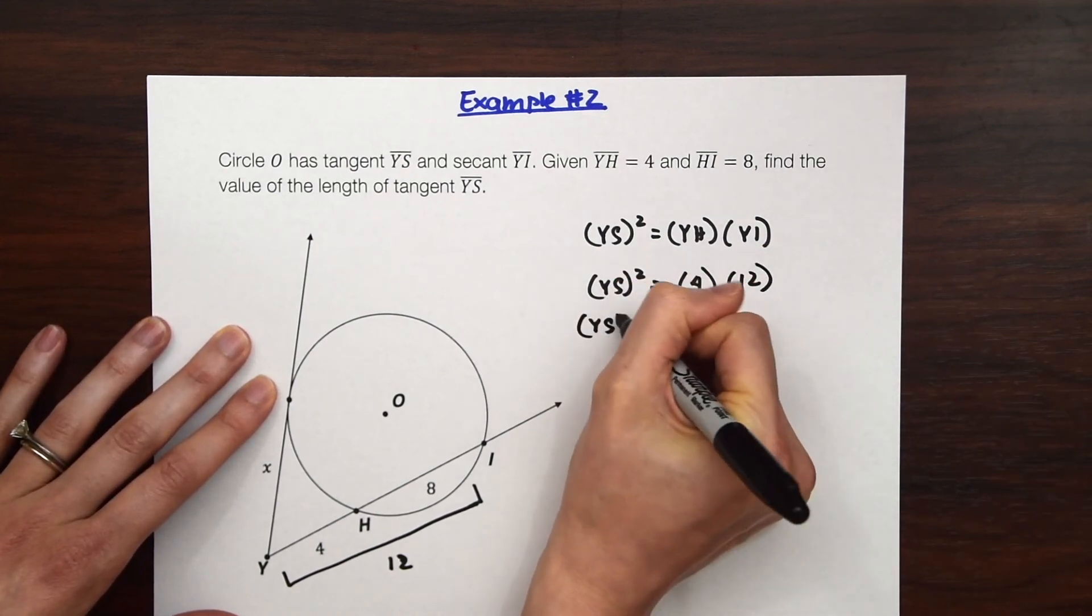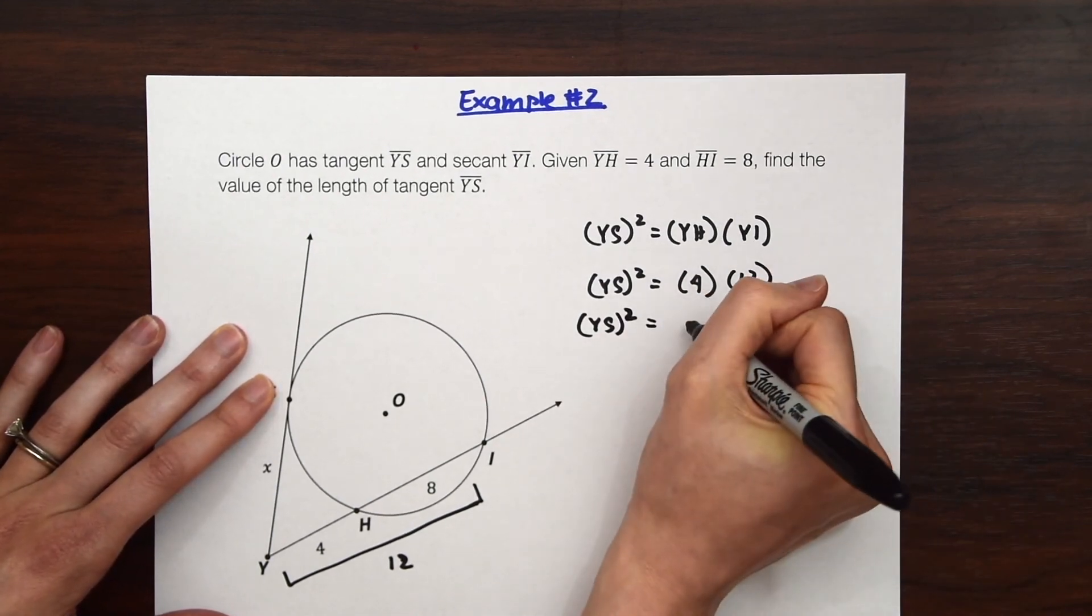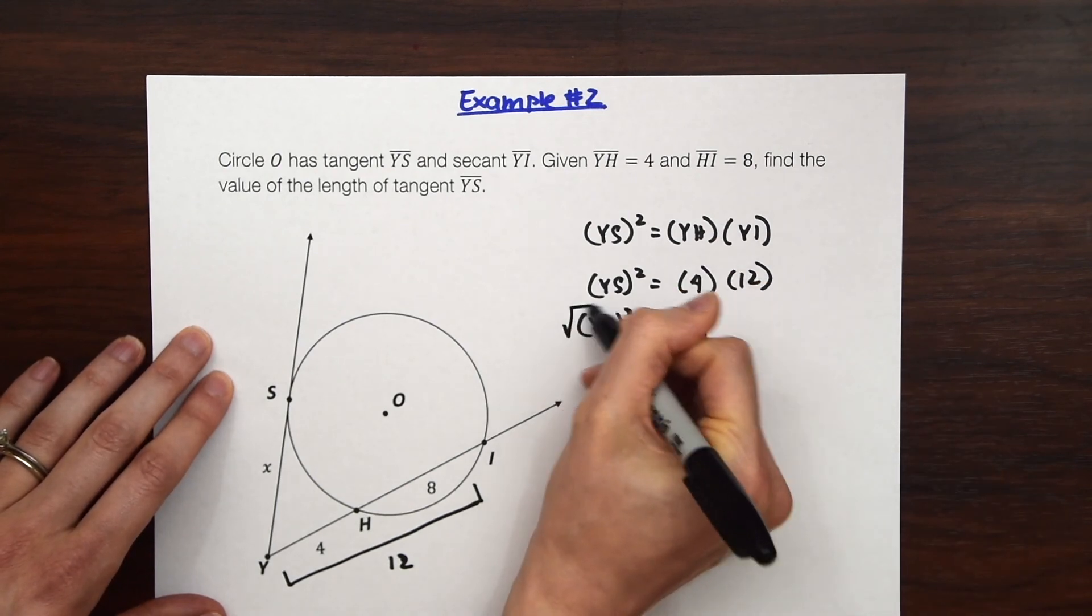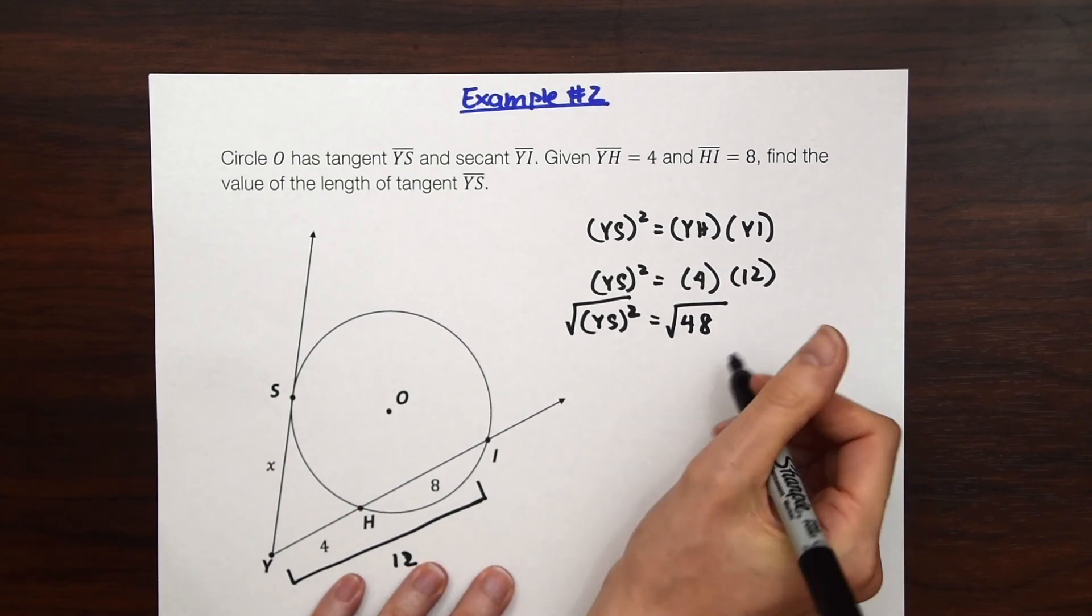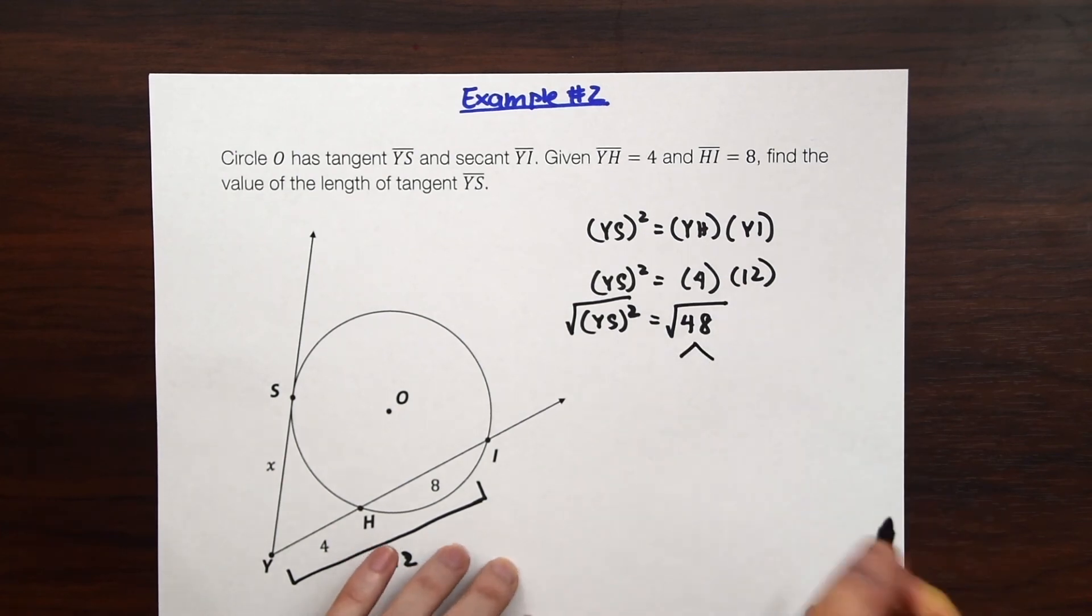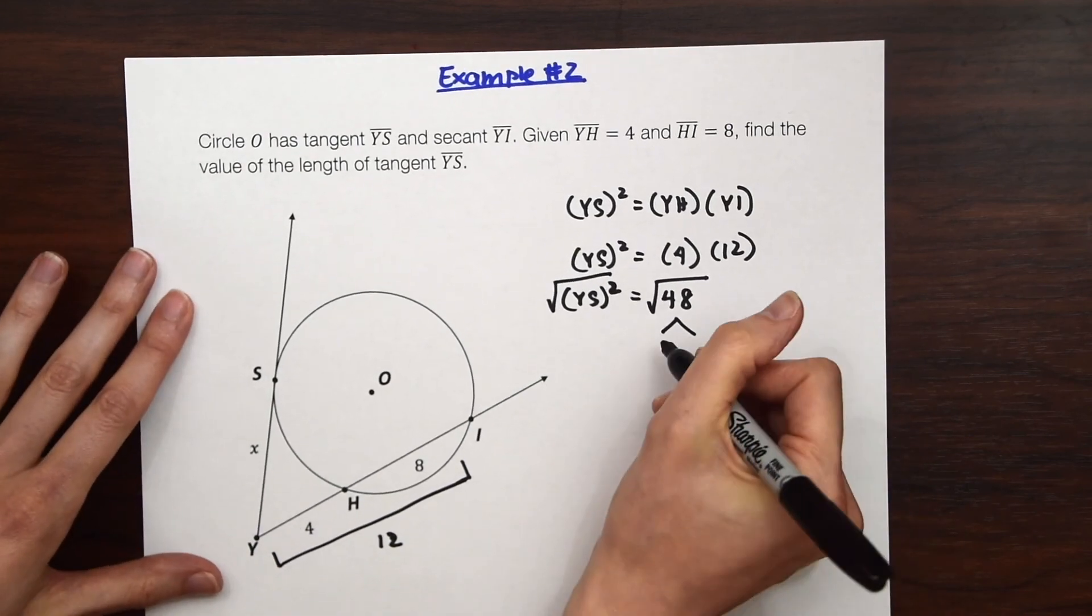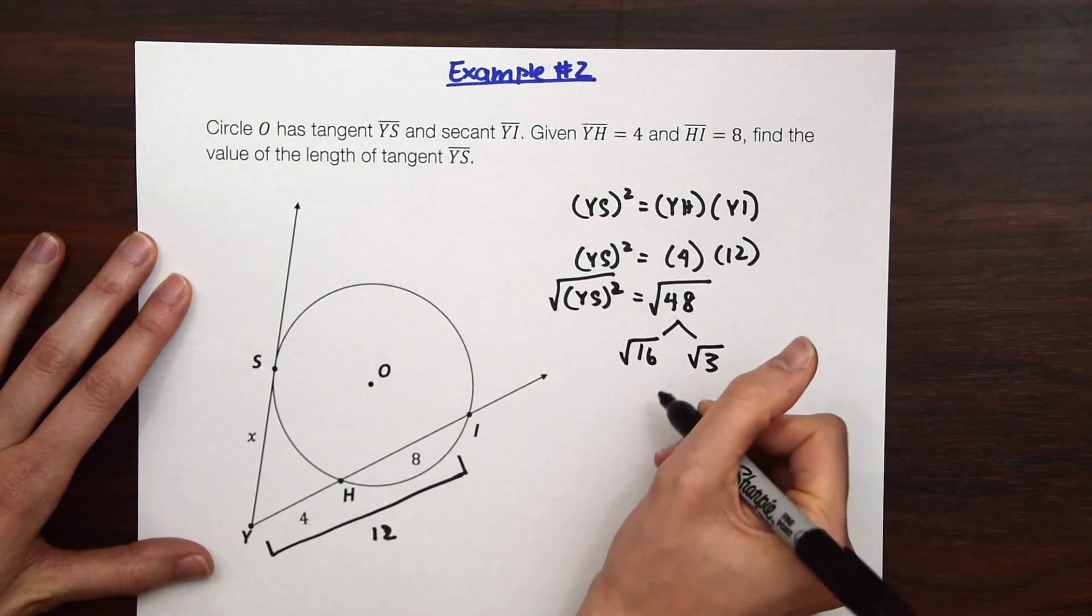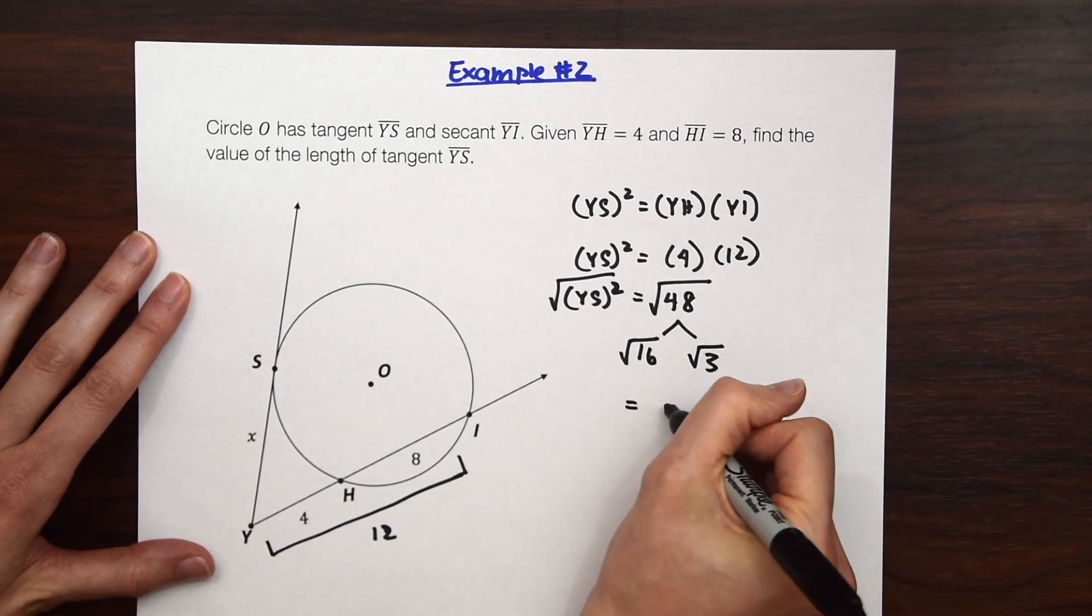So now we just need to calculate this again and use a little algebra. So 4 times 12 is 48. Take the square root of both sides. I know this one isn't a perfect square but we can simplify this radical a little bit. So you can play around with numbers in your calculator or you can realize that this is just going to be broken up into radical 16 times radical 3. Which is, we can take the square root of this radical 16. That's a perfect square.